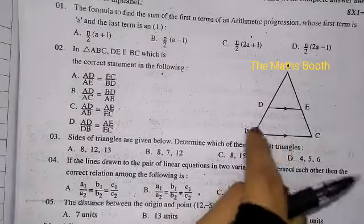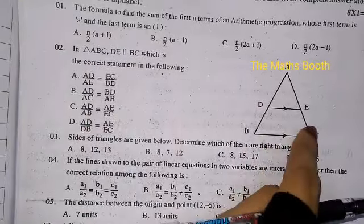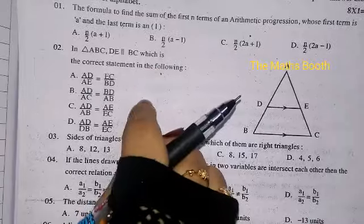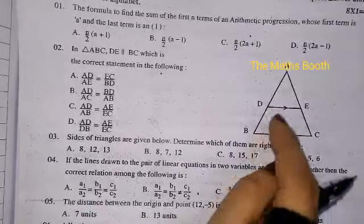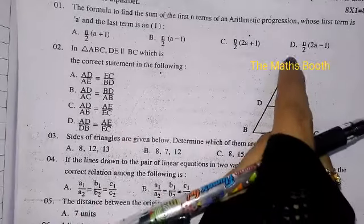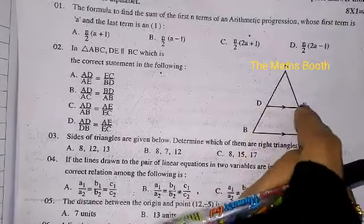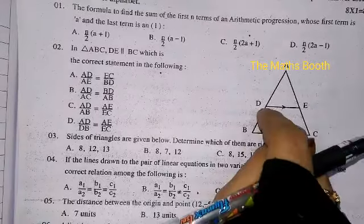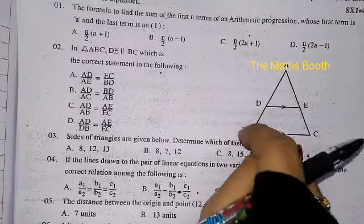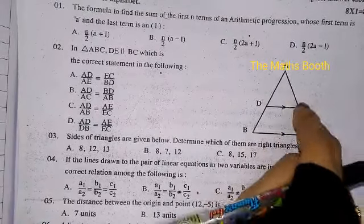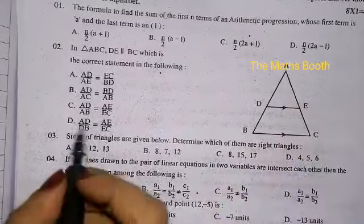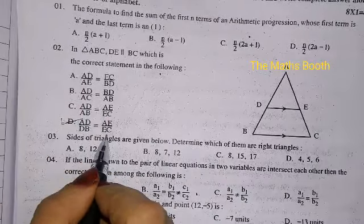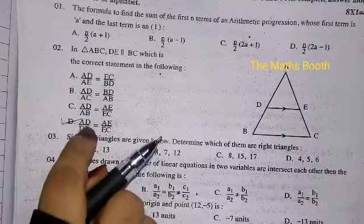Next question: in triangle ABC, DE is parallel to BC. Which is the correct statement? We know that AD/DB and AE/EC is the correct answer — AD/DB = AE/EC. This is the correct option.